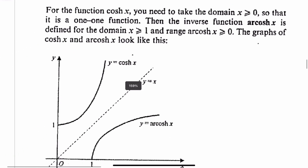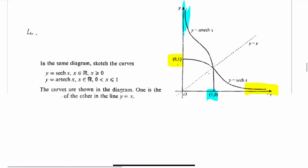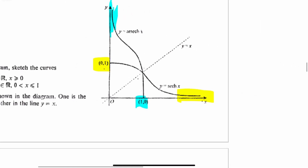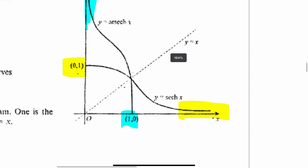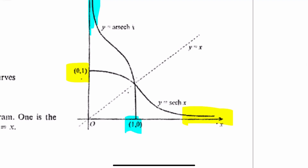For cosine: there was cosh — it was one-to-one in this range. You reflect it and that's what you get for the inverse hyperbolic cosine. We've also done the hyperbolic sec. You can see hyperbolic sec would have been here, and then the inverse would be like this.